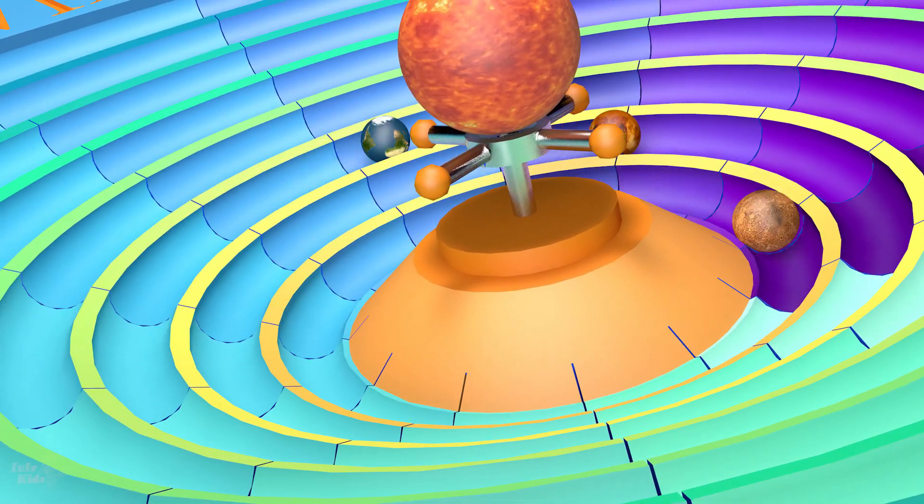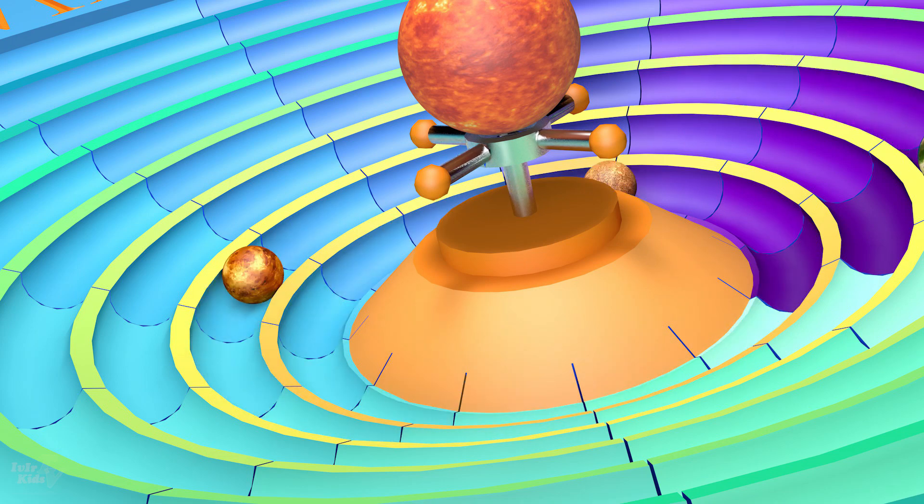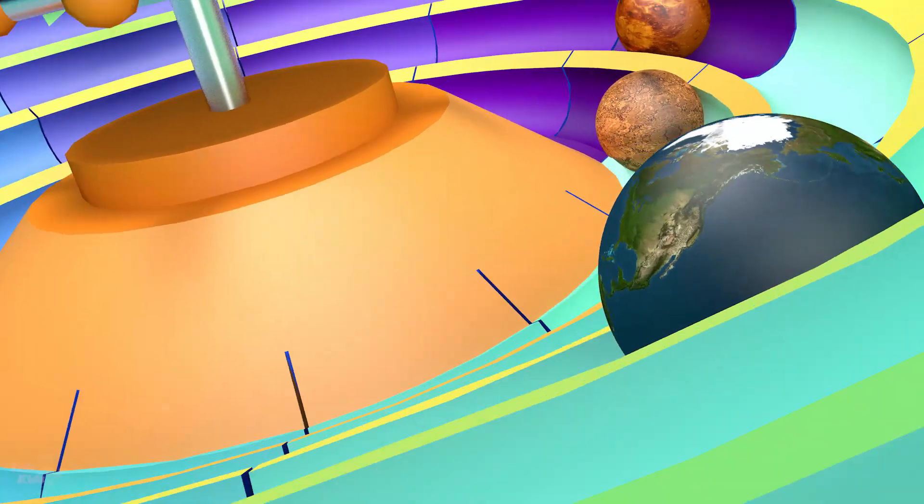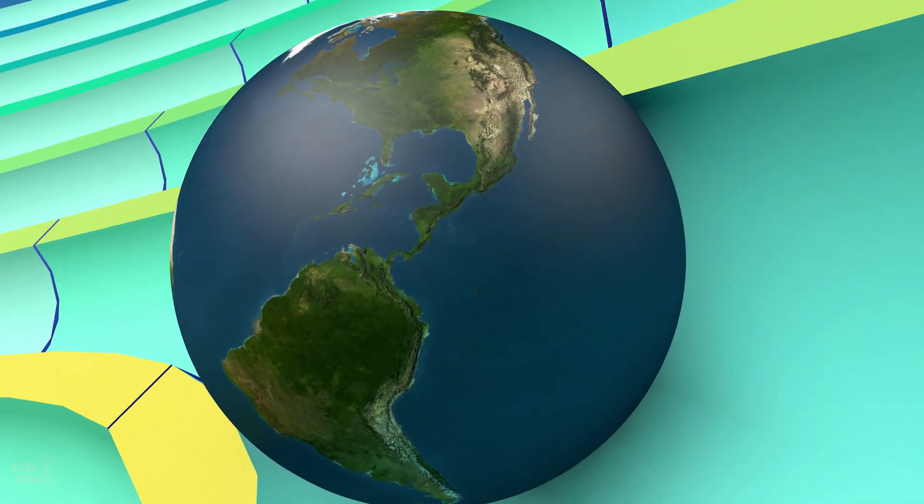It makes one revolution around the sun in 0.615 Earth years or 228 days. Yes, Earth is the third planet on the list.